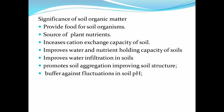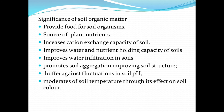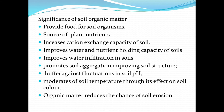It buffers against fluctuations in soil pH — so organic matter acts as a buffer that resists change in soil pH. It also moderates soil temperature through its effect on soil color. If organic matter is added to the soil, it darkens the soil, and a dark soil is able to absorb heat from the sun, which will change the soil temperature. Organic matter also reduces the chance of soil erosion by binding soil particles together.